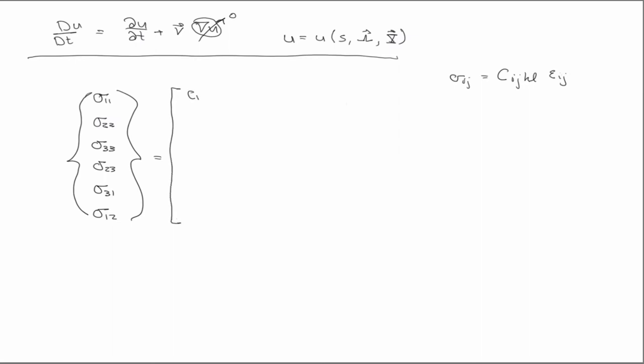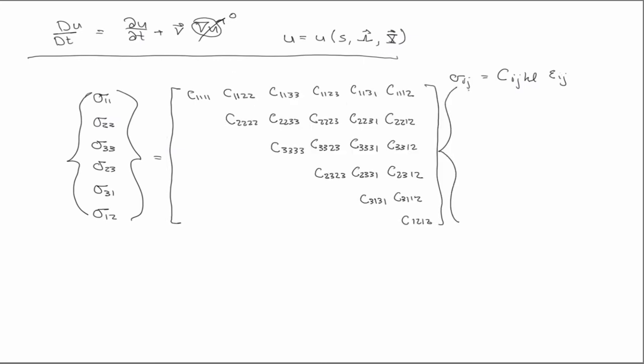Then we have c 11, then this is going to take a while to write out. And that multiplies the strain like this. So this is actually 2 epsilon 23, 2 epsilon 31, 2 epsilon 12.